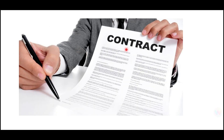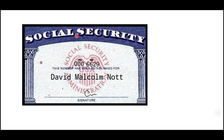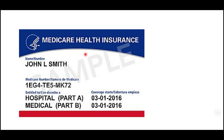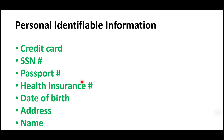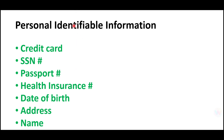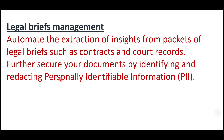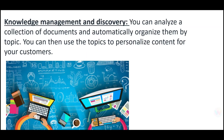Another use case involves contracts and confidential documents. These contracts contain personally identifiable information — PII — such as credit card numbers, social security numbers, first name, last name, address, and medical health insurance details. Comprehend can go through these documents and redact that information. Redacting means removing all the PII so there is no compromise of sensitive data. This is very important for legal briefs management — contracts, court records, and other legally secure documents. Please remember the concept of redact — this will be asked in the certification exam.